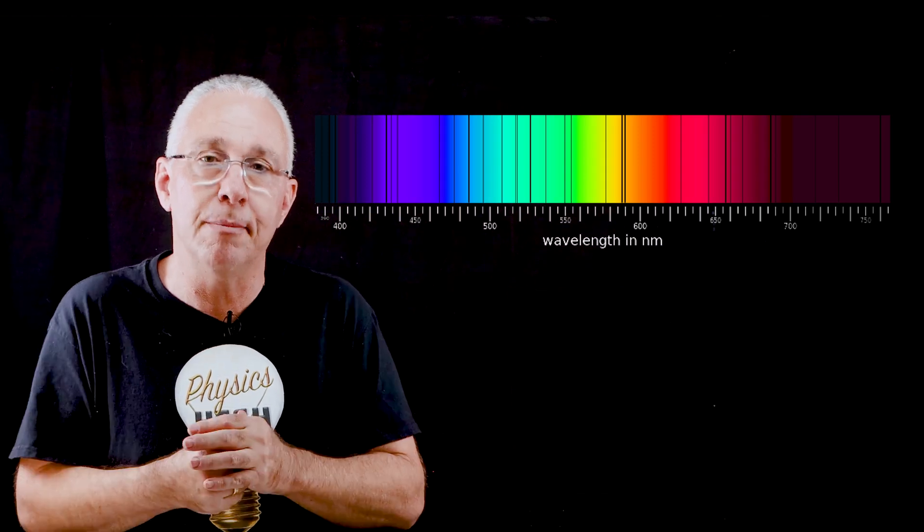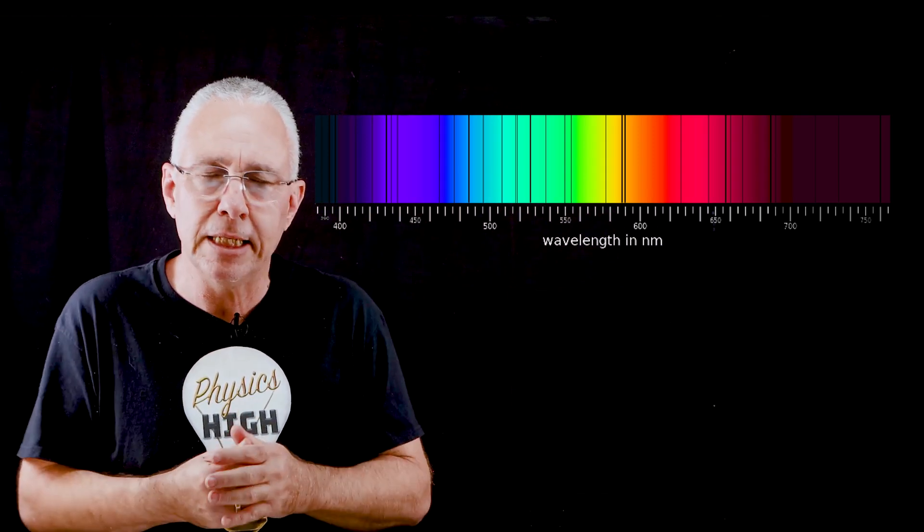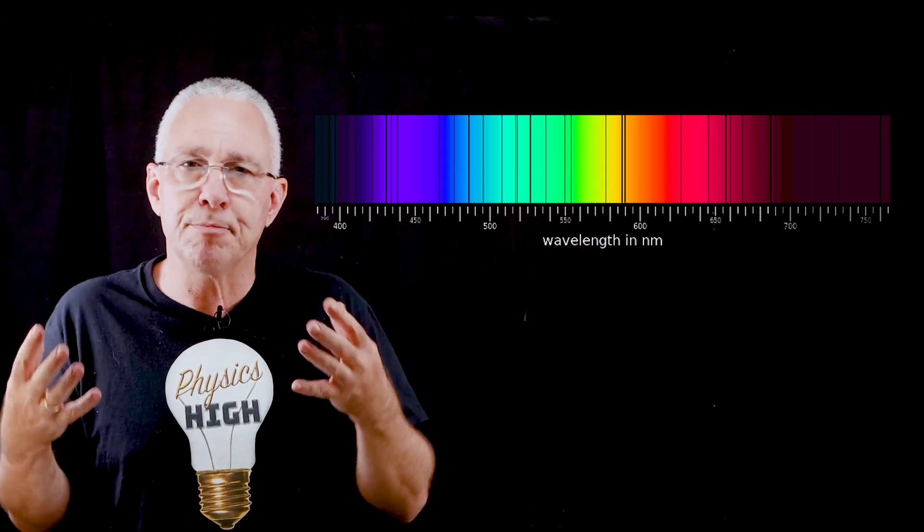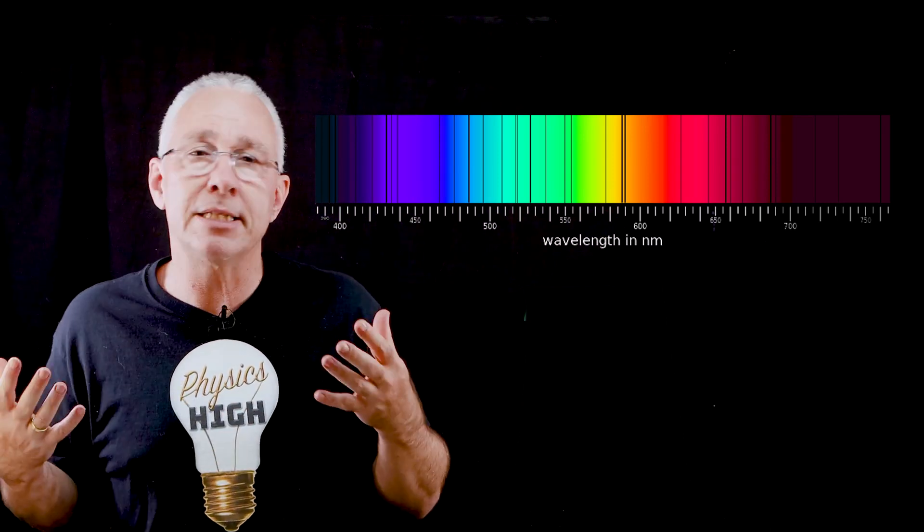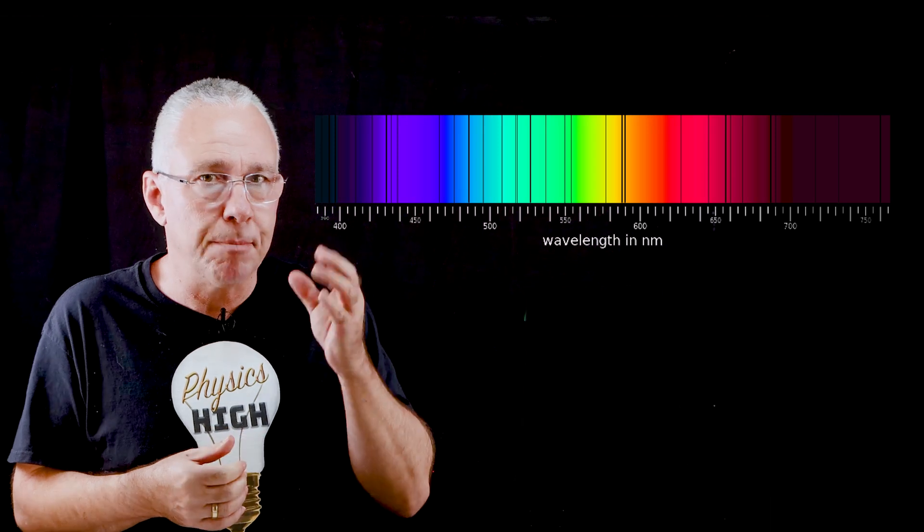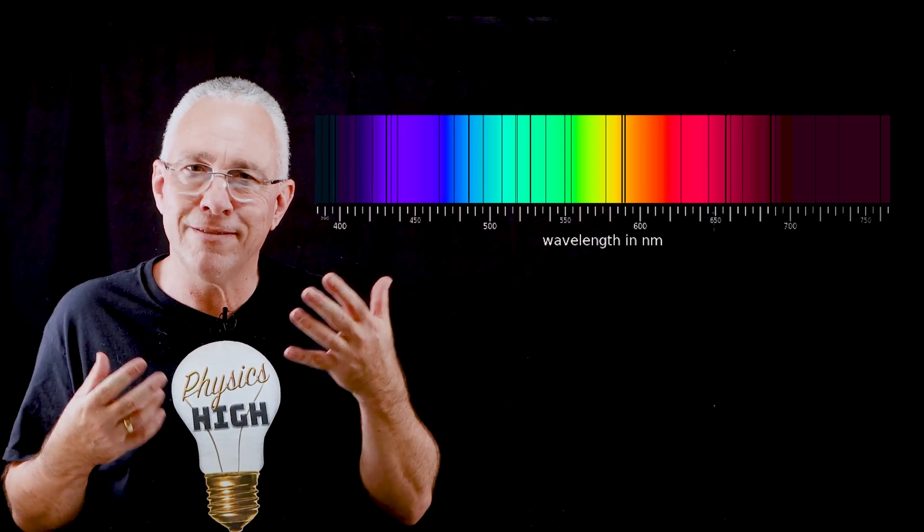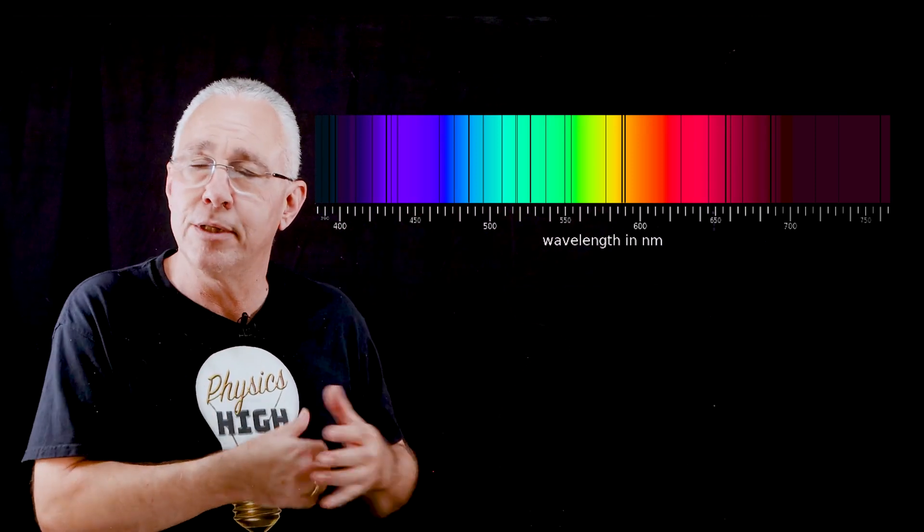Two examples. This absorption spectrum of the sun. The light that's generated in the core is passing through its own atmosphere, and if observed here on Earth, it's passing through the Earth's atmosphere. By studying the lines, you can determine the chemical composition of the gases which is interacting with the light.